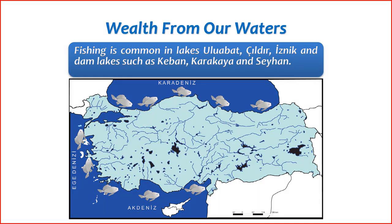Fishing is indeed common in various lakes and dam lakes in Turkey, including Uluabat, Sıldır, İznik, and others like Karakaya and Seyhan. Each of these water bodies has its unique characteristics and may support different fish species.